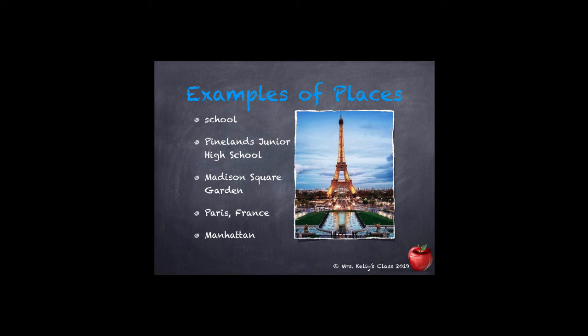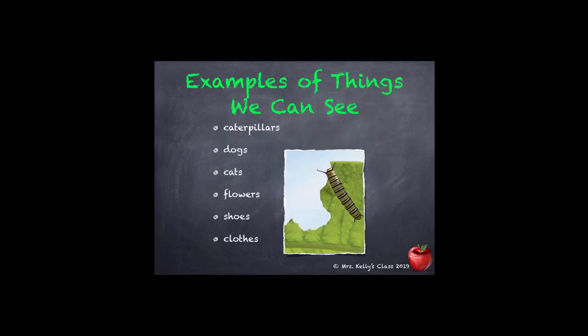Here are examples of places: our first one is school — school is a place. Primelands Junior High School is another place, though being specific it has capital letters. We also have Madison Square Garden, Paris France, and Manhattan. Here's a picture of the Eiffel Tower, which is in Paris, France.